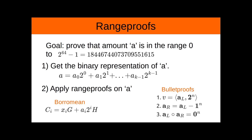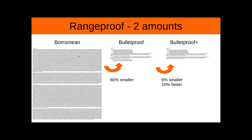We have to get the binary representation of A for all the different protocols, and then we apply these range proofs on A. Before, we had the Borromean signatures, which were doing a ring signature on every bit of the amount A. Then we changed the protocol to Bulletproofs, where we are doing something a bit cleverer and storing less data. For two amounts to range proof, with Bulletproofs we made the transactions 80% smaller, and with Bulletproofs+ a little bit smaller and a little bit faster.